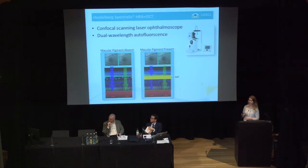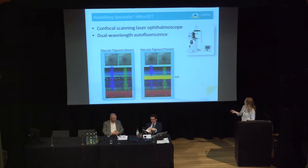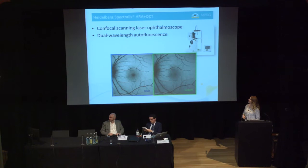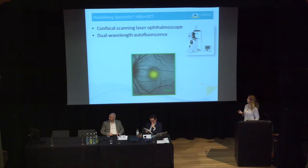The device we use in our lab for autofluorescence is the Heidelberg Spectralis HRI plus OCT, a confocal scanning laser ophthalmoscope using dual wavelength autofluorescence. It takes two images simultaneously — we take a 30-second video of about 300 images in both a blue and a green wavelength. You can see that with macular pigment, the blue light is attenuated whereas the green is not. It aligns and averages all 300 images, and you can see this dark spot in the middle where the macular pigment is located. You then subtract the two images to get the amount of macular pigment.